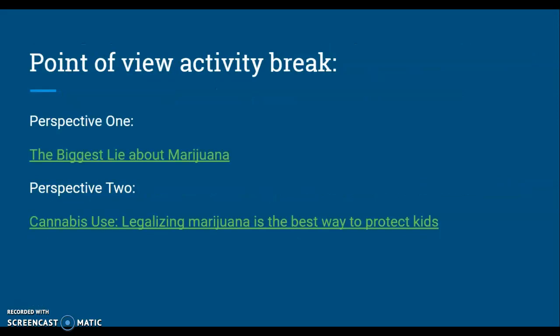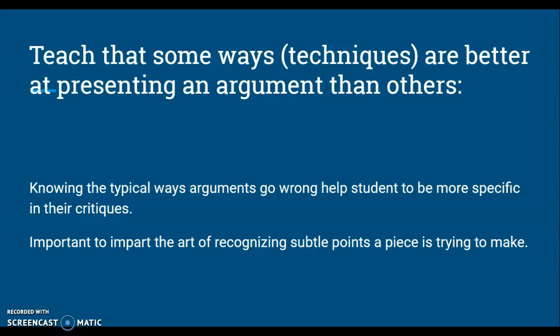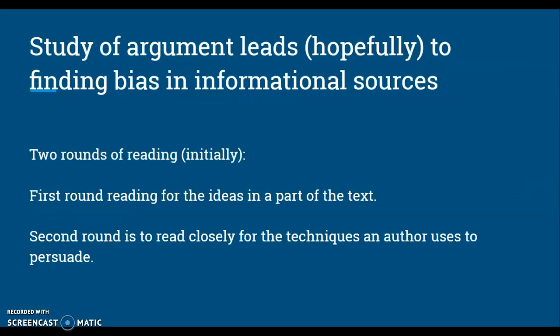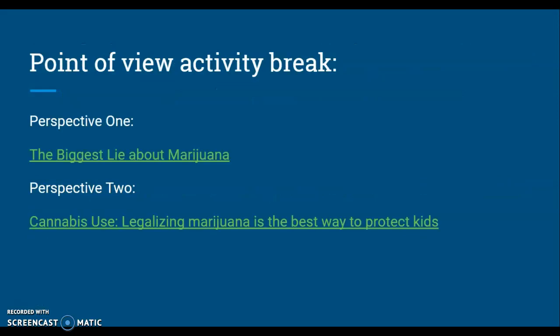Now we are going to do a point of view activity break. We are going to look at two articles: one is a negative perspective about legalizing marijuana called 'The Biggest Lie About Marijuana,' and the second perspective is 'Cannabis Use: Legalizing Marijuana is the Best Way to Protect Kids.' We are going to read those and then go back to looking at arguments, so you can try to find the bias. I wanted to show you what we are talking about and what lens to look at these articles through.